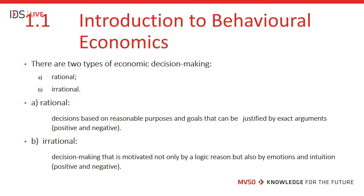There are two types of economic decision making: rational and irrational. Rational decisions are based on reasonable purposes and goals that can be justified by exact arguments. There are two types of rational economic decision making: positive and negative. Irrational decision making is motivated not only by logic and reason, but also by emotions and intuitions. Similarly, there are two types of irrational economic decision making: positive and negative.